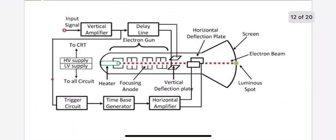The next block is the horizontal amplifier. The signal produced by the time-base generator — the sawtooth voltage — needs to be amplified before it is applied to the horizontal deflection plates. So we use the horizontal amplifier to amplify this sawtooth waveform. This completes the horizontal deflection system.